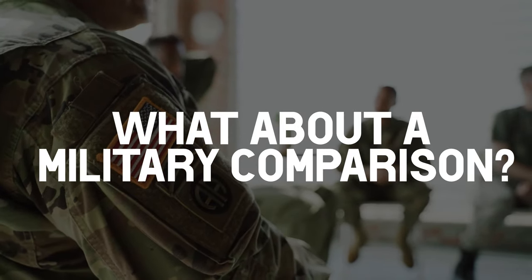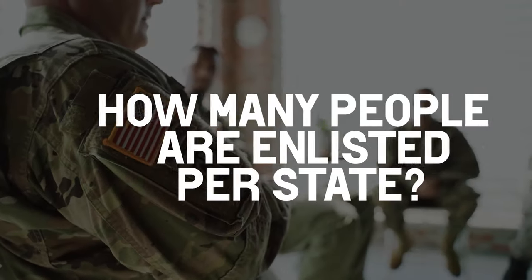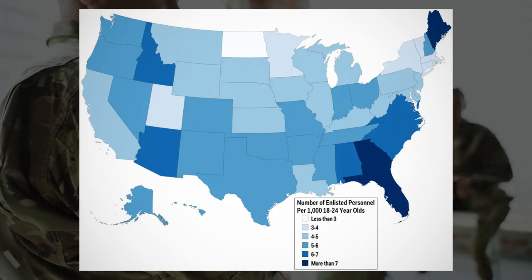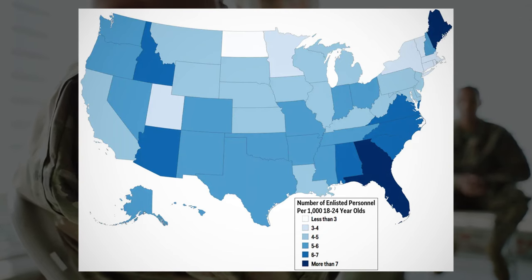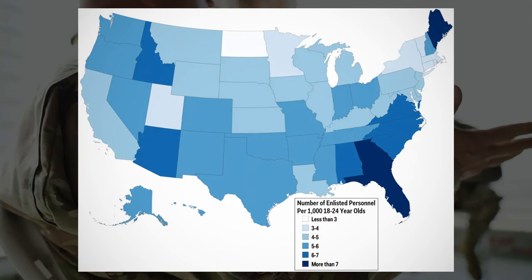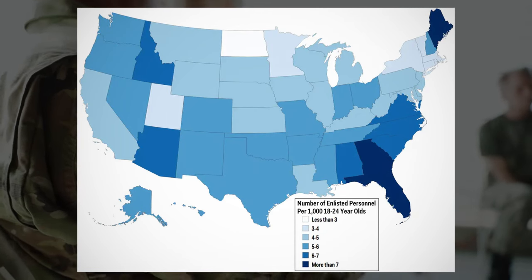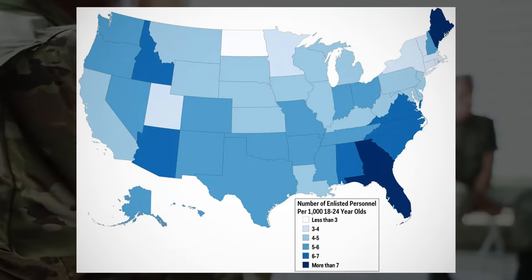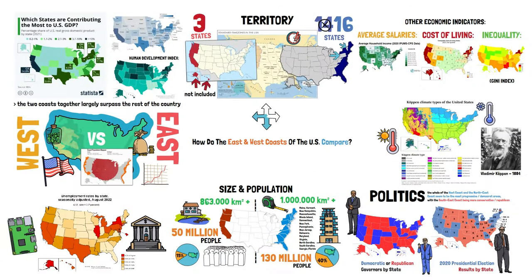In this type of video, we usually compare army sizes — obviously we can't do that here since regions of the same country share the same army. But we can look at how many people are enlisted per state. The East coast clearly has more enlisted personnel than the West, which makes sense because they have more population. A lot of these maps end up showing the whole of the US states, but I try to focus on the comparison between the ones on the two coasts, since that's what this video is about.